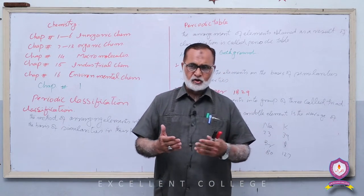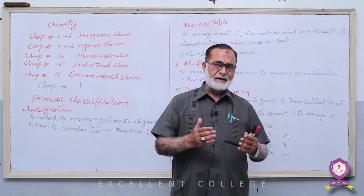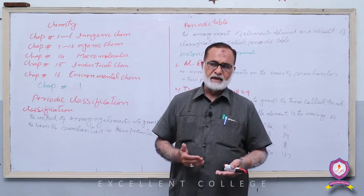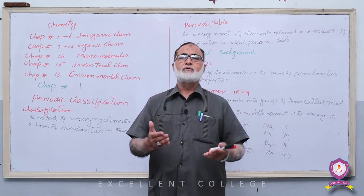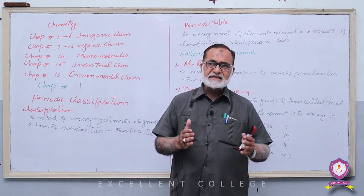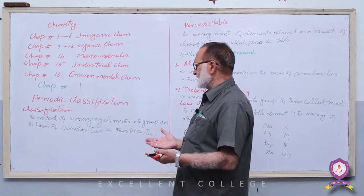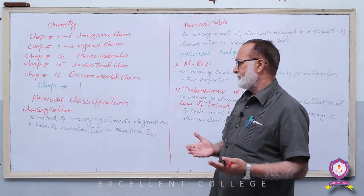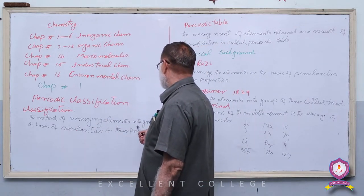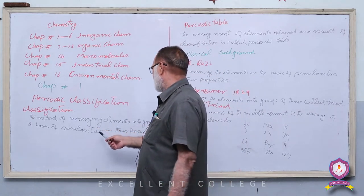تو یہاں یہ concept سامنے آتا ہے کہ there is some relationship between atomic mass and the properties of elements۔ اس concept کو بنیاد بنا کے مختلف scientists نے elements کو classify کرنے کی کوشش کی — جس کو کہتے ہیں historical background of the periodic table۔ پہلی definition: Periodic classification is the method of arranging elements into groups on the basis of similarities in their properties۔